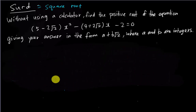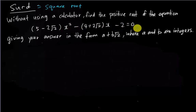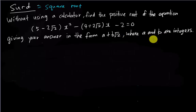Now let's start on the question. Without using a calculator, find the positive root of the equation: 2x² − (4 + 2√2)x − 2 = 0, giving your answer in the form a + b√2 where a and b are integers — meaning they cannot be decimals or fractions. First, you must recognize this as a quadratic equation.